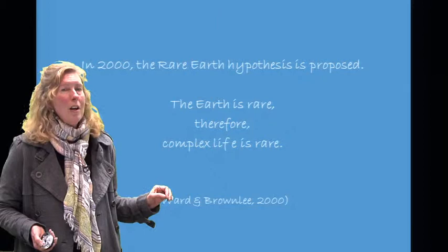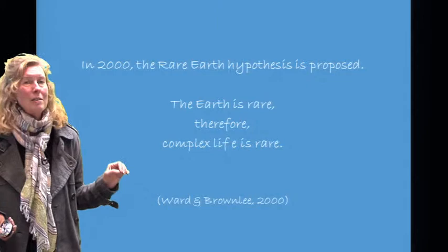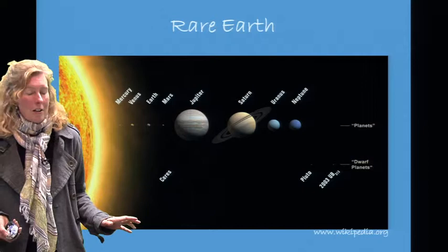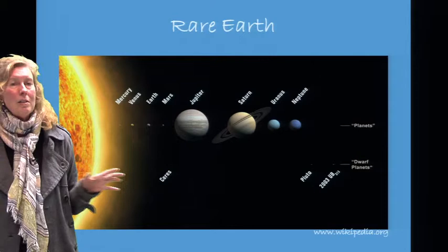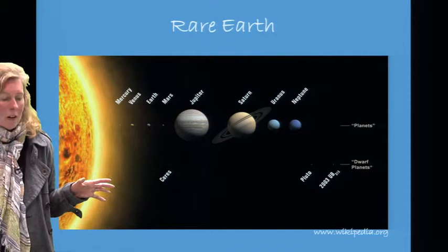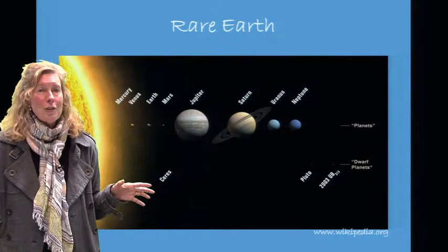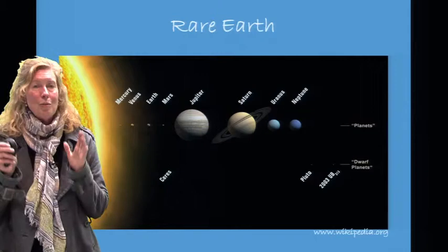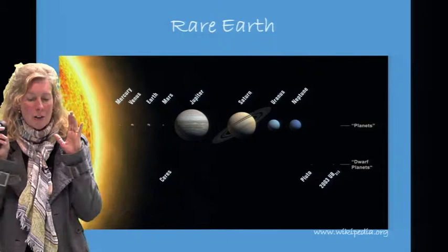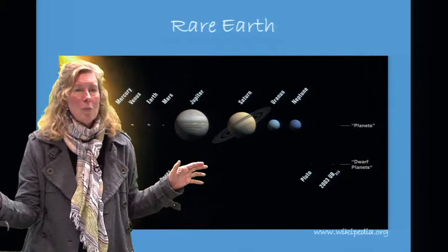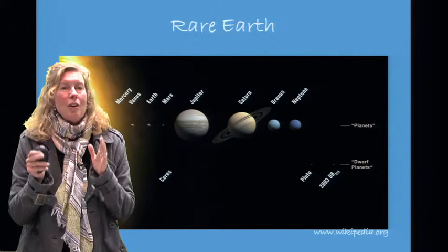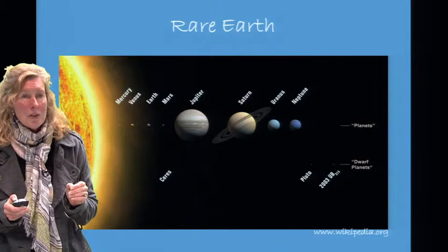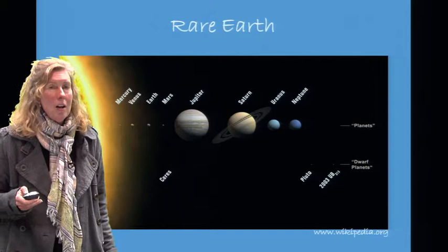In 2000, the Rare Earth Hypothesis was proposed, stating that the Earth is rare, therefore complex life is rare. It proposes that we are an island — the Earth is an island in a sea of non-life. This is also called the Goldilocks Hypothesis: just as Goldilocks wanted everything just right — not too large, not too small, not too hot, not too cold — the Earth too is just right for life. It occupies a habitable zone far enough from the Sun, but close enough to have liquid water.